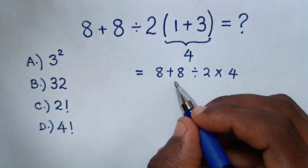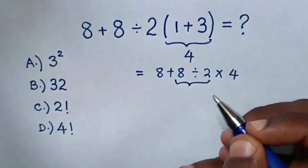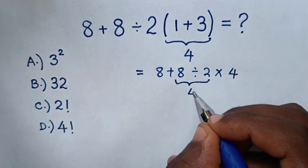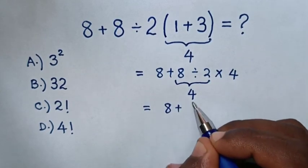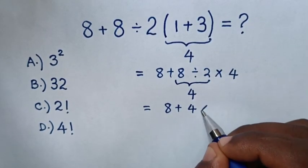Then, we'll deal with division. So, this divided by this is 4. So, it will be equal to 8 plus 4 times 4.